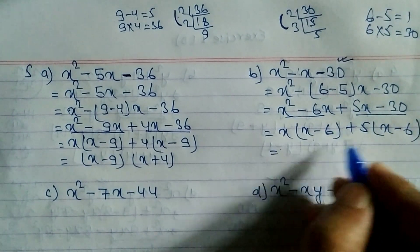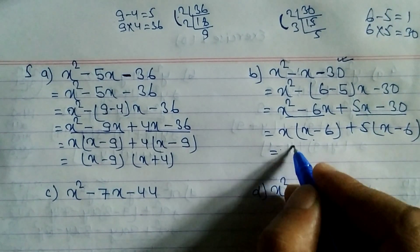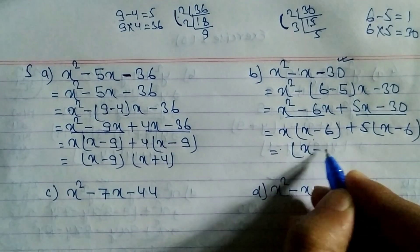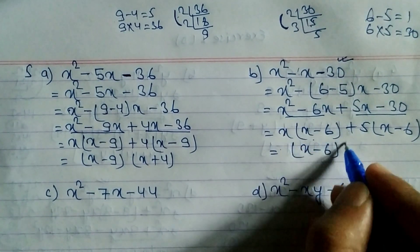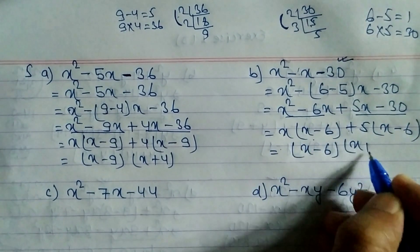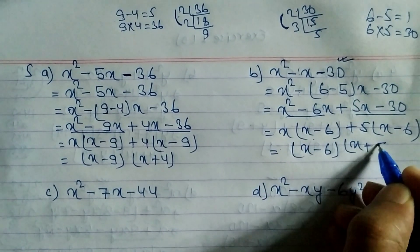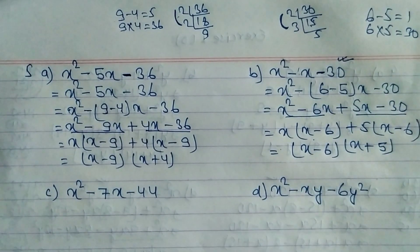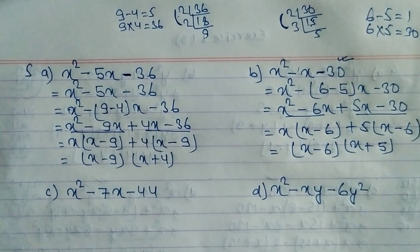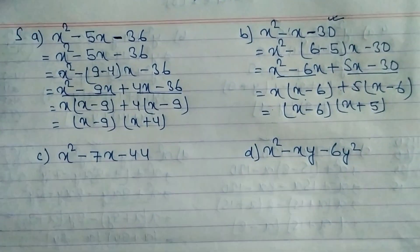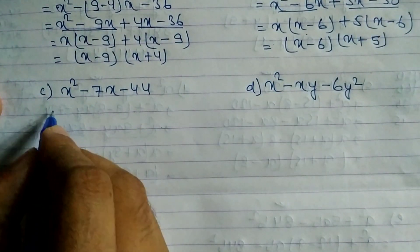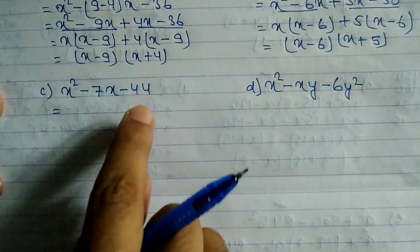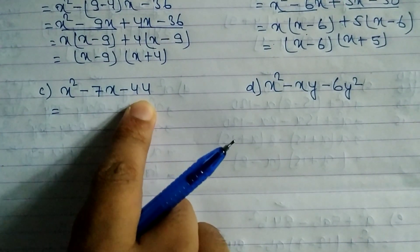We can see (x - 6) is common in both groups. Taking (x - 6) as common, the remaining factor is (x + 5). So the answer is (x - 6)(x + 5). Hope you understand.